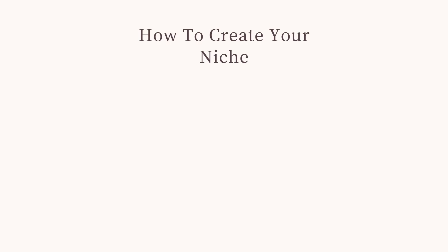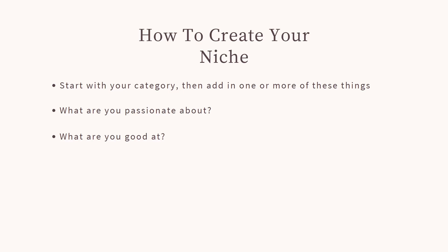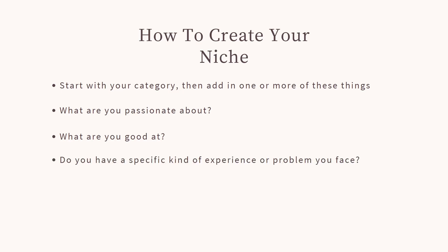So now let's talk about how to create your niche. You want to start with your category, then add in one or more of these things. Think about what you are passionate about, because your passion is going to go a long way — it will shine through and bring a quality audience to your products. Also think about what you are good at, because expertise is a great way to niche down. Also consider whether you have a specific experience or problem you've faced — maybe you've become an expert in that area and people want your knowledge or advice. That is also a way to create your niche.